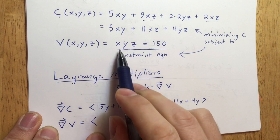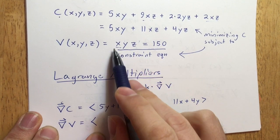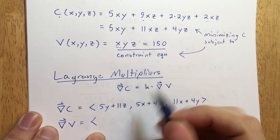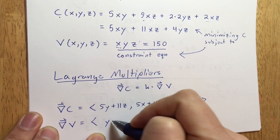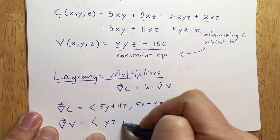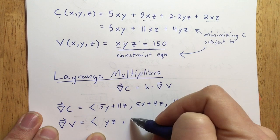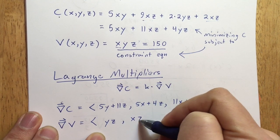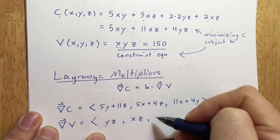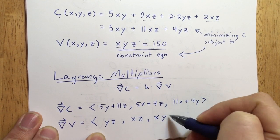For the gradient of V, the X derivative is YZ, the Y derivative is XZ, and the Z derivative is XY.